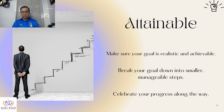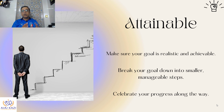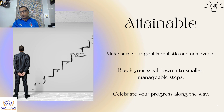The third one is attainable. Make sure your goals are realistic and achievable. The goal has to be big, but also has to be attainable. Break down your goals into smaller manageable steps and celebrate your progress along the way — that is attainable.